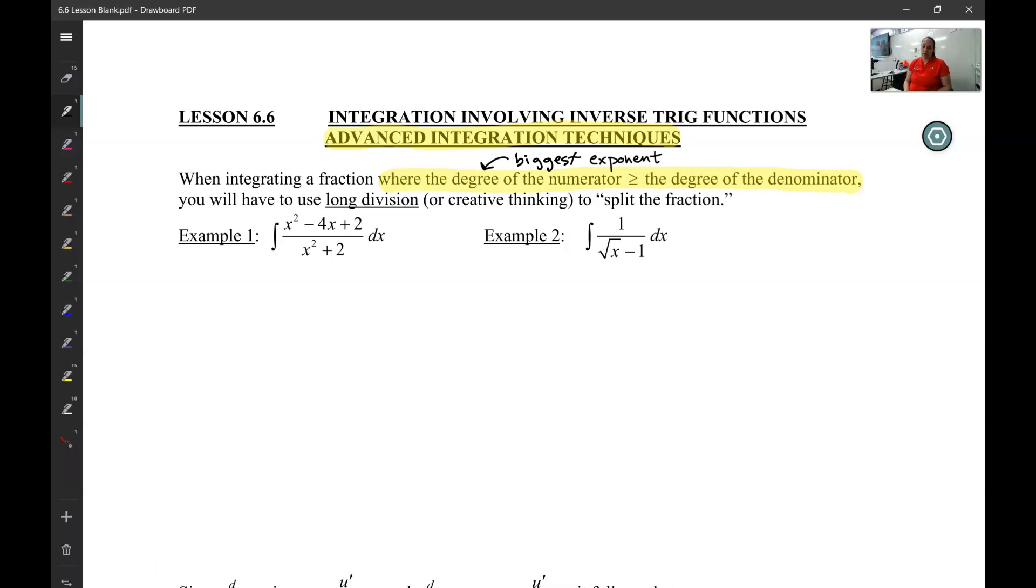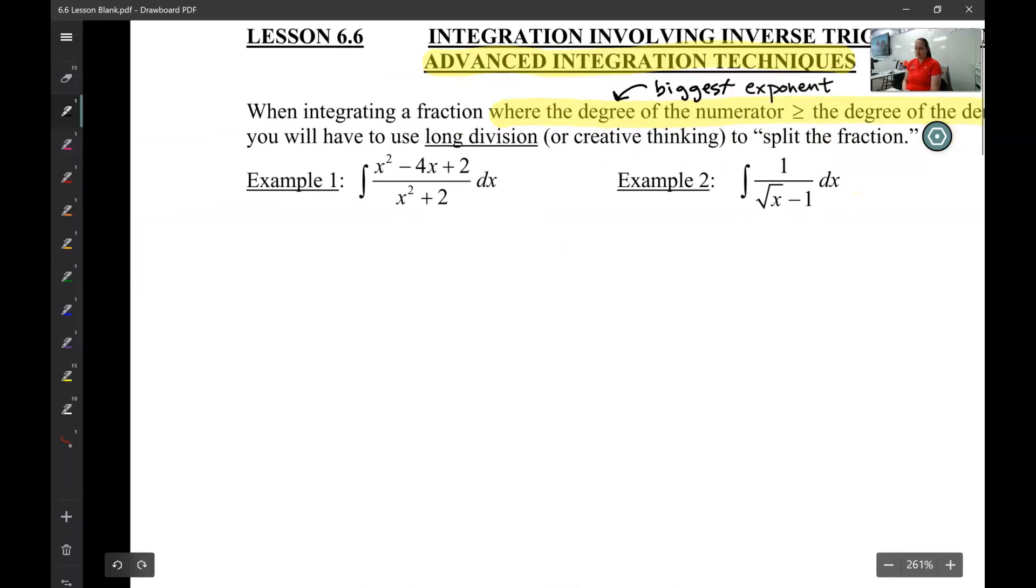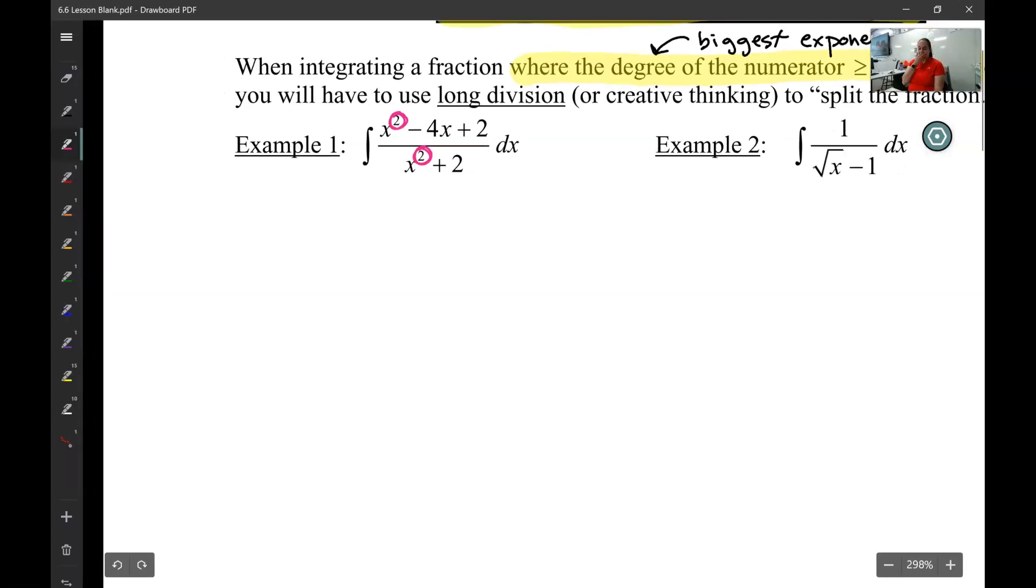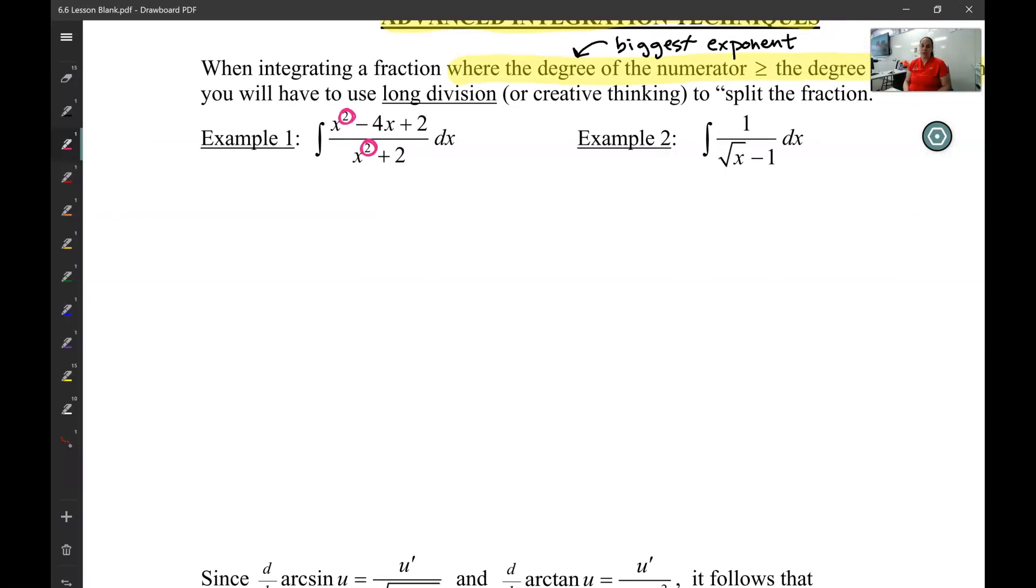That's the only trick we have for that. So if we look at this first one, example number one, the biggest exponent in the numerator is two, the biggest exponent in the denominator is two. So this is going to be a long division. Anytime those biggest exponents are equal or top heavy, we have to do long division. So now we get to see if you remember long division.